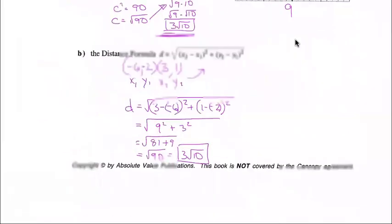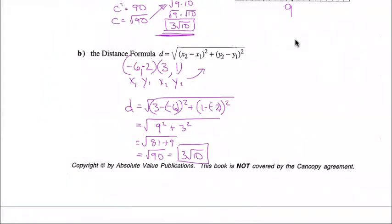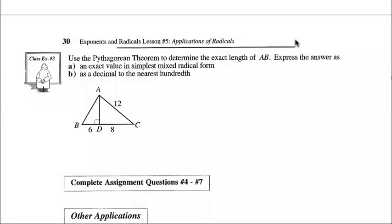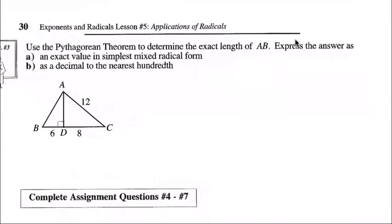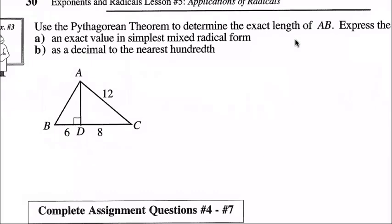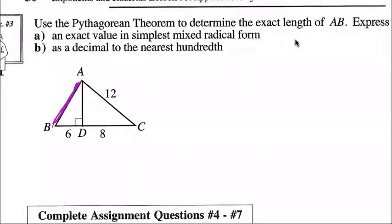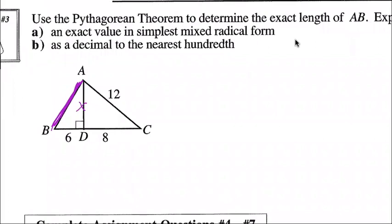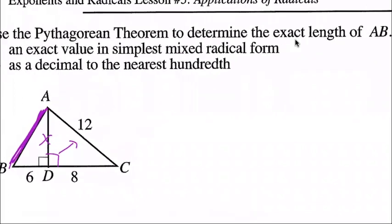Two different ways to do that calculation — maybe you have a graph and can count the legs for the Pythagorean formula, or maybe you just have coordinate points. Example 3: use the Pythagorean theorem to determine the exact length of AB, expressed as an exact value in simplest mixed radical form and as a decimal to the nearest hundredth. To find AB, I first need an intermediate length — so I'll work on the first triangle with legs 12 and 8.